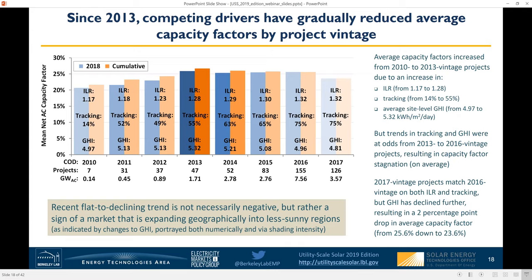This graph breaks out average capacity factor by project vintage or commercial operation date. There's a steady improvement from 2010 through 2013 vintage projects, driven by increases in all three metrics: average insolation as expressed by GHI, the prevalence of tracking, and the average inverter loading ratio. Since 2013, average ILRs have held more or less steady at around 1.3, while the prevalence of tracking and average GHI have moved in opposite directions, resulting in largely stagnant capacity factors among more recent project vintages. The lower average GHI since 2013 reflects the geographic expansion of the market outside California and the southwest — which is actually a positive trend, even though it has a negative impact on average fleet-wide capacity factor.